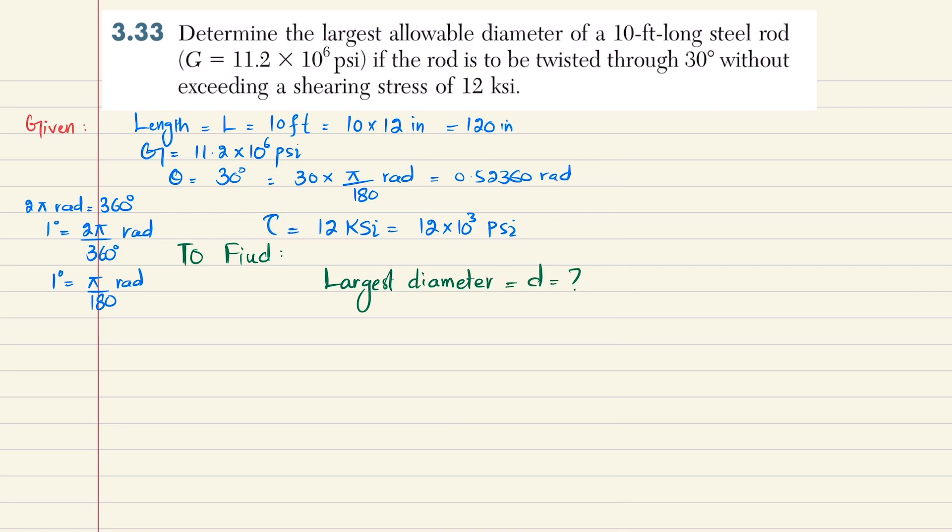Let's start with the solution. We know that the angle of twist θ equals TL/(GJ), where T is the torque, L is length, G is modulus of rigidity, and J is the polar moment of inertia.